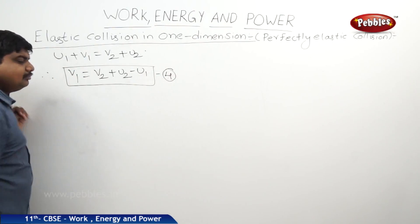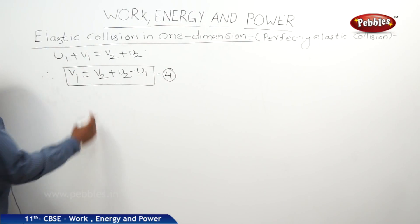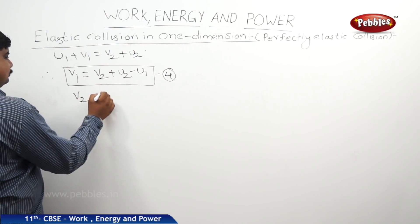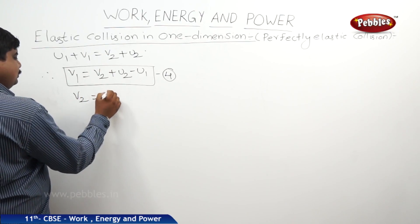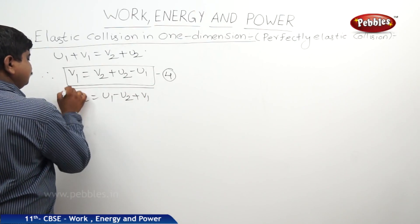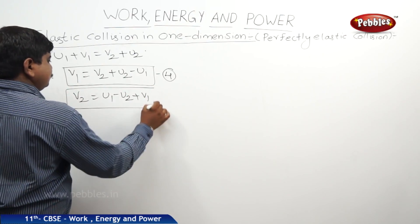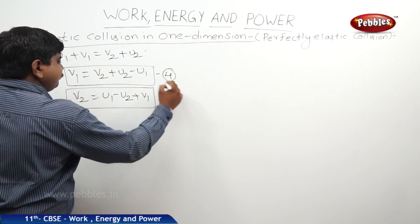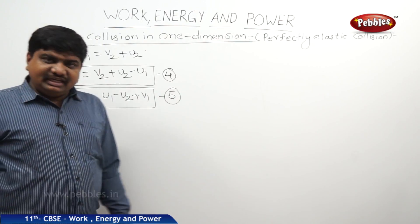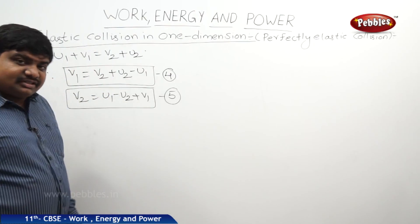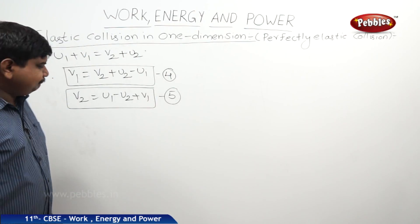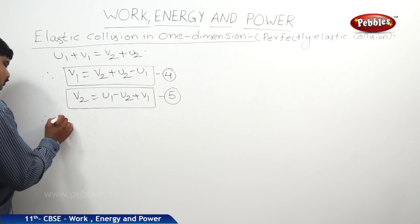From Equation 3 we can write: v1 = v2 + u2 − u1, which is Equation 4. And also: v2 = u1 − u2 + v1, which is Equation 5. Now we will substitute the value of v1 from Equation 4 into Equation 1 to solve for v2.